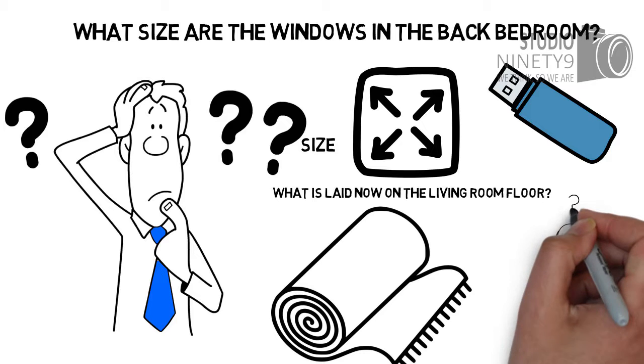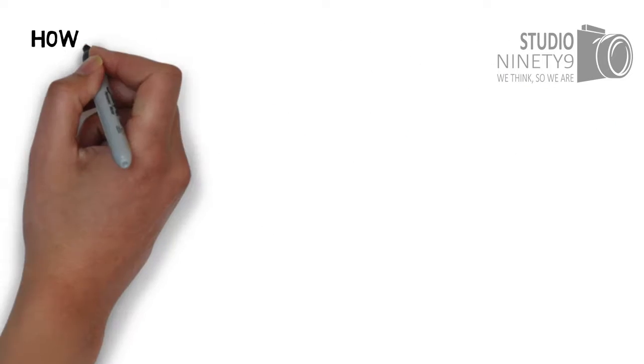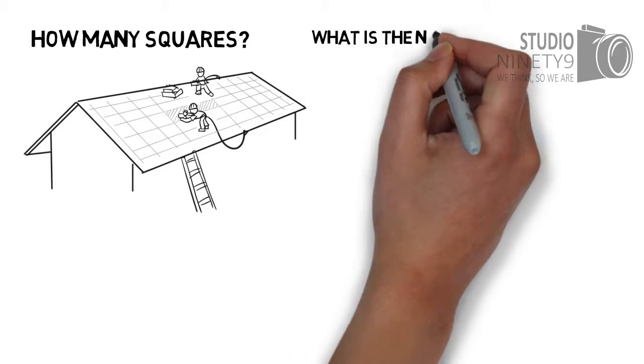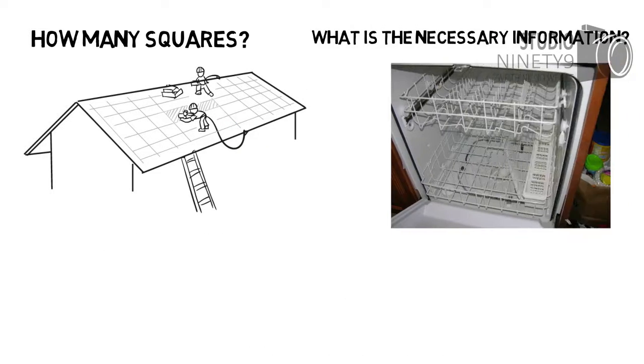Where was the carpet bought? How many squares? We will tell you what a square is. What about the roof? What is the necessary information on the dishwasher when it breaks down?